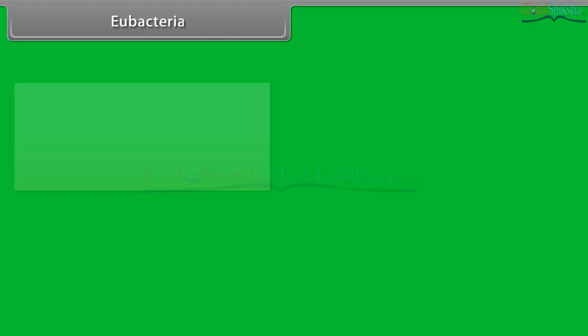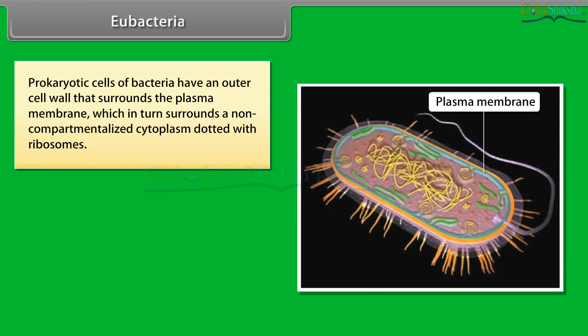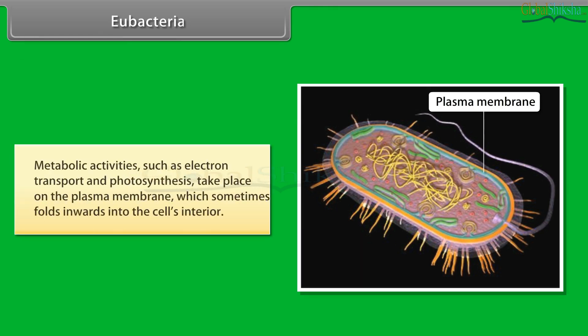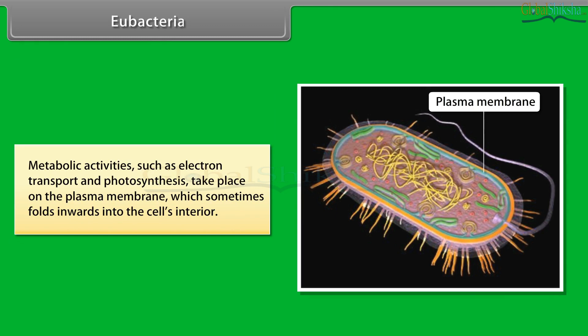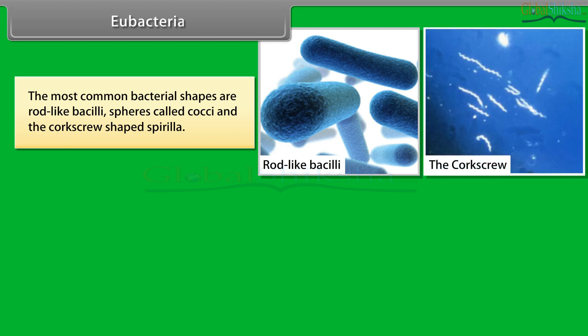Eubacteria: prokaryotic cells of bacteria have an outer cell wall surrounding the plasma membrane, which in turn surrounds a non-compartmentalized cytoplasm dotted with ribosomes. They generally lack membrane-enclosed organelles such as nucleus, chloroplasts, and mitochondria. A circular strand of DNA, usually coiled into one region of the cell called the nucleoid, serves as the single chromosome. The most common bacterial shapes are rod-like bacilli, spheres called cocci, and corkscrew-shaped spirilla.